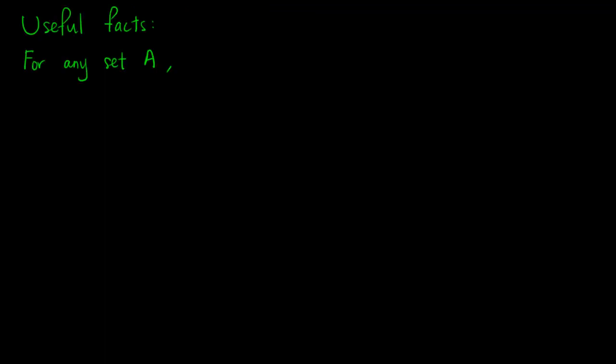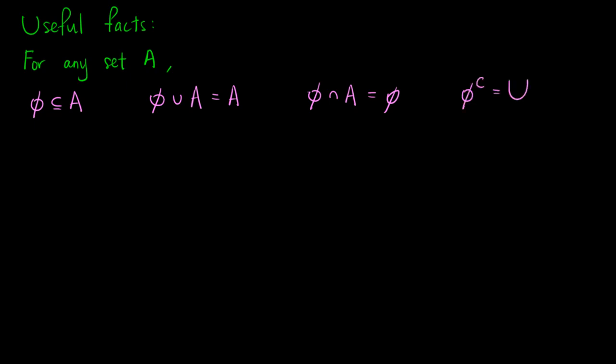Let's write down some useful facts regarding empty sets. The empty set is a subset of the set {1, 2, 3}, and the argument works for any set — so the empty set is a subset of any set A. The union of the empty set and any set A is just A, because there are no elements in the empty set to add to A. The intersection of the empty set and A is empty, because there are no elements in the empty set, so clearly no elements in common with A. The complement of the empty set is the universal set, since everything in U is not in the empty set, so everything is in its complement.